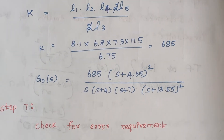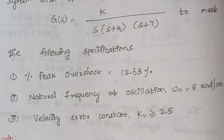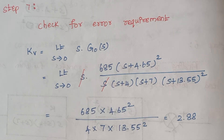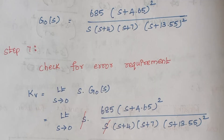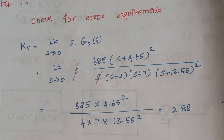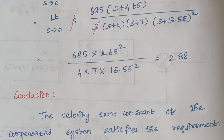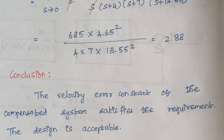The final step is checking the error requirement. The velocity error constant KV = limit as S tends to 0 of S*G_naught(S). Substituting S = 0 into the open loop transfer function, KV is found to be 2.88. Since 2.88 is greater than or equal to 2.5, the velocity error constant satisfies the specification. Therefore, the design is accepted. If you have any doubt, let me know in the comment section. Thank you.